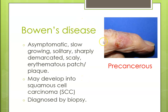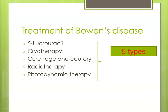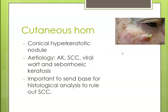Bowen's disease is a pre-cancerous condition that is usually asymptomatic and slow growing, presenting as an erythematous patch or plaque that is an elevated skin lesion. It may develop into squamous cell carcinoma later on. Diagnosis is made by biopsy, and there are five types of treatment options available.